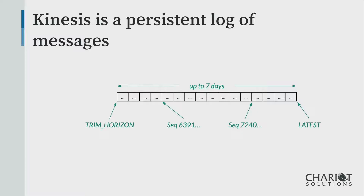You can also go anywhere in the middle. Every message has a sequence number, and if you know that sequence number, you can start reading from it. This is really useful when you have a message consumer that has to shut down for some reason — as long as you record the last sequence number that you read, you can always pick up where you left off, unless the messages have passed the trim horizon.